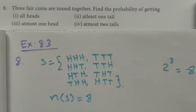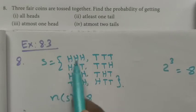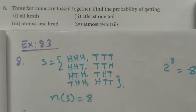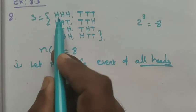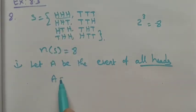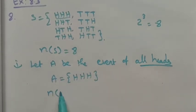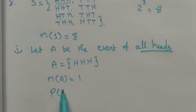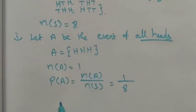First event: we want to find the probability of all heads. All heads means only one favorable outcome: head-head-head. Let A be the event of all heads. So n(A) = 1. Then probability of A equals n(A) divided by n(S) equals 1 out of 8. So we have only one chance out of eight to get all heads.